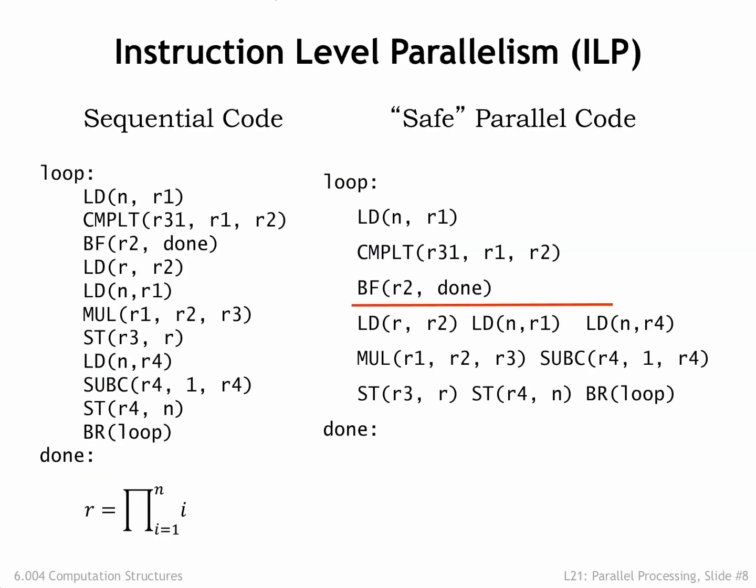Here's an example that will let us explore the amount of instruction-level parallelism that might be available. On the left is an unoptimized loop that computes the product of the first N integers. On the right, we've rewritten the code, placing instructions that could be executed concurrently on the same line. First notice the red line following the BF instruction — instructions below the line should only be executed if the BF is not taken. That doesn't mean we couldn't start executing them before the results of the branch are known, but we would have to be prepared to throw away their results if the branch was taken. The possible execution order is constrained by the read-after-write dependencies shown by the red arrows — these are the potential data hazards that occur when an operand value for one instruction depends on the result of an earlier instruction.